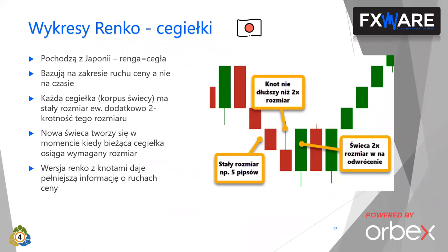Na początek część teoretyczna, trochę o wykresach niestandardowych. Najpierw wykresy RENKO, czyli tak zwane cegiełki, pochodzą z Japonii - RENGA to po japońsku cegła. Wykresy RENKO polegają na tym, że świece są tworzone nie w jakimś określonym czasie, ale bazują na tym jaki zakres przejdzie cena, jaki ruch wykona.